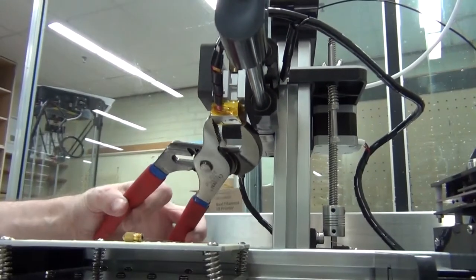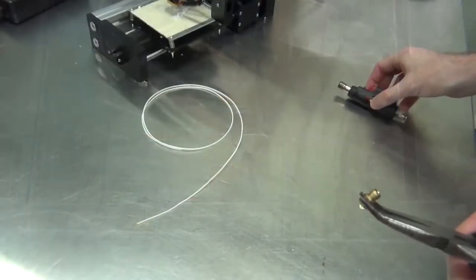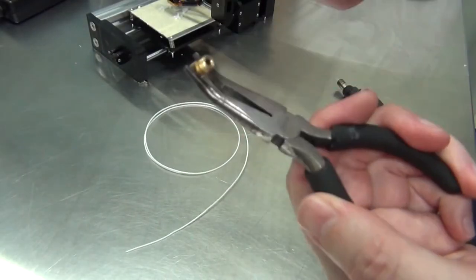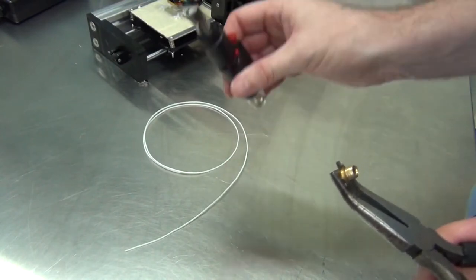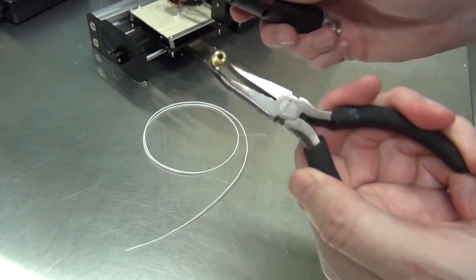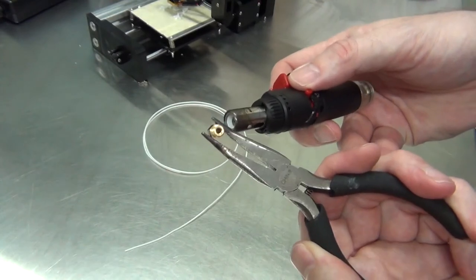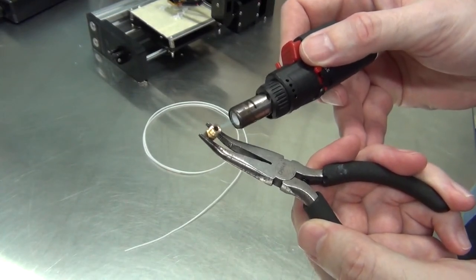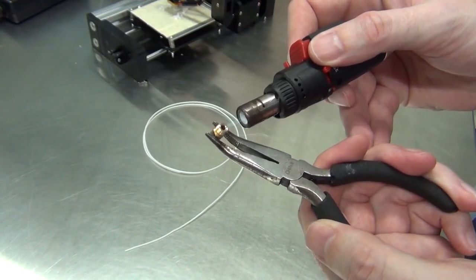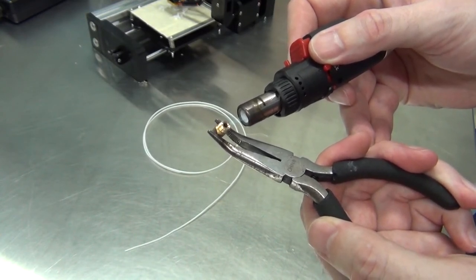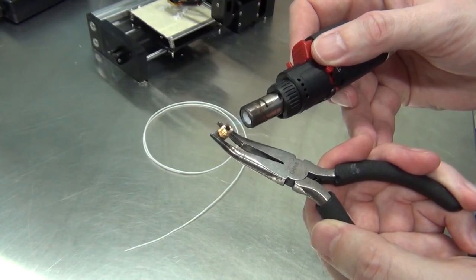And what we're going to use here is a technique called a cold pull. Usually there might be a bit of foreign matter in the end of the nozzle. I'm using one of our little blow torches here and what we do is gently heat it up. If it starts smoking or burning or is on fire it's probably too hot. We just want it at a temperature again where our filament is going to melt.